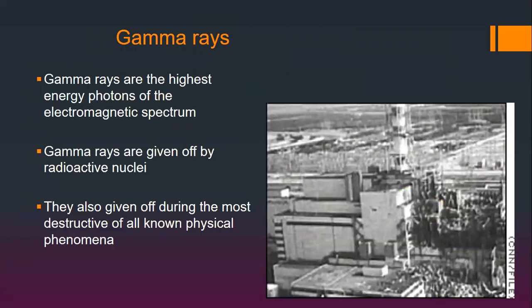Now we're at the final part of the spectrum — gamma rays. Gamma rays have the highest energy per photon, the shortest wavelength, and the highest frequency. The most common source for gamma rays is radioactive nuclei, and our fear of nuclear radiation is primarily due to gamma rays. Here's a picture of Chernobyl after its disaster — the roof was blown off, exposing the core of the reactor, spreading radioisotopes in the surrounding region giving off alpha, beta, and gamma rays.